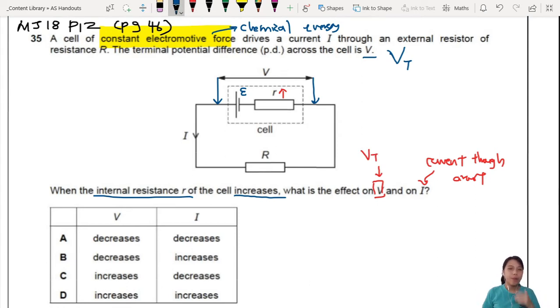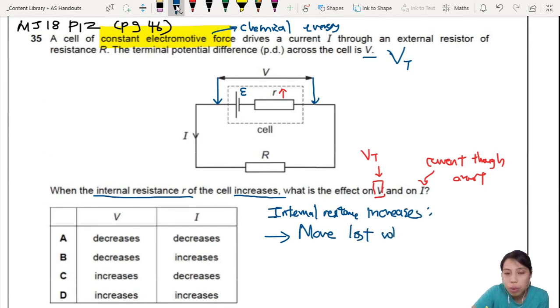So, this is how we can think about the effects of internal resistance. Firstly, internal resistance, when it increases, it can cause a number of things. Firstly, that means there's more lost volts. So, more lost volts, that's one effect. More lost volts because more energy will be lost, now your internal resistance is so big, so it will get very hot. Energy lost as heat.